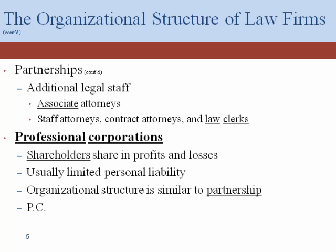Partnerships will oftentimes have additional legal staff. In a partnership, there are usually two categories of attorneys: the partners — the owners of the business — and associate attorneys. Associate attorneys are attorneys who are on what's called partnership track. Their hope and expectation is to become a partner after they have been in the law firm for several years, almost like an old-fashioned apprenticeship model.